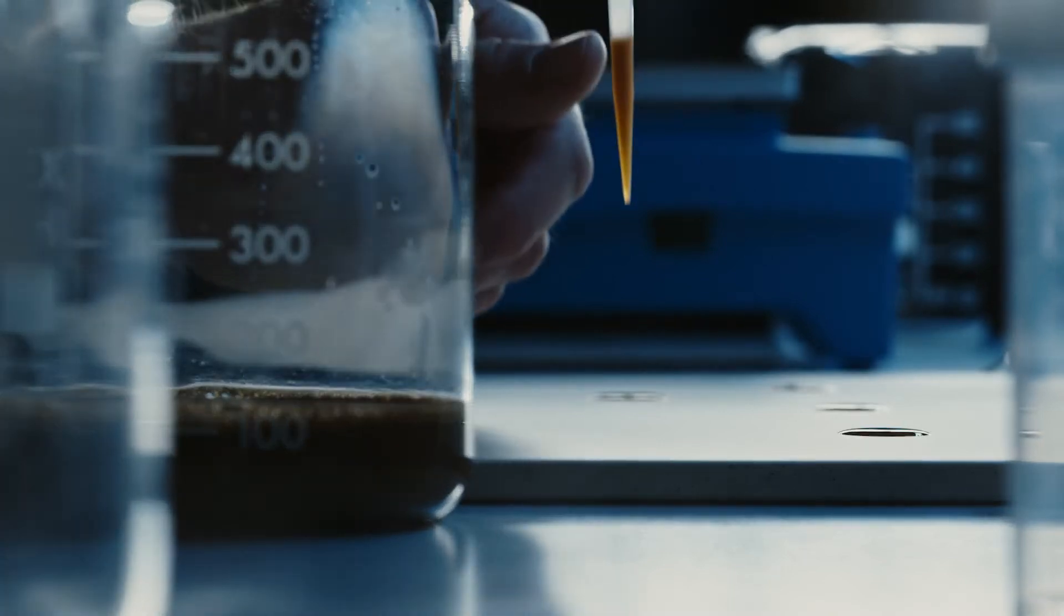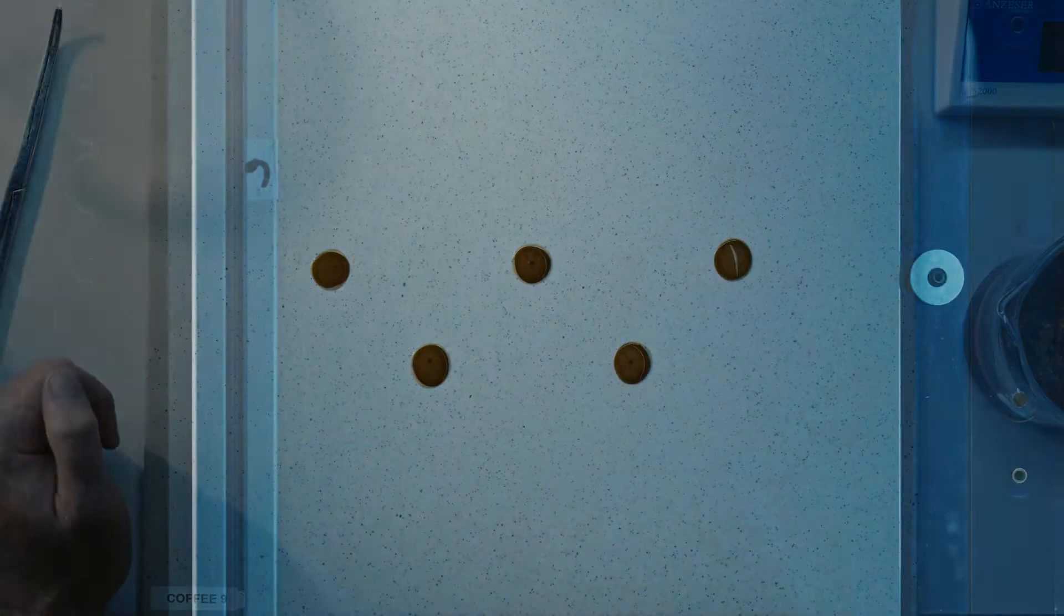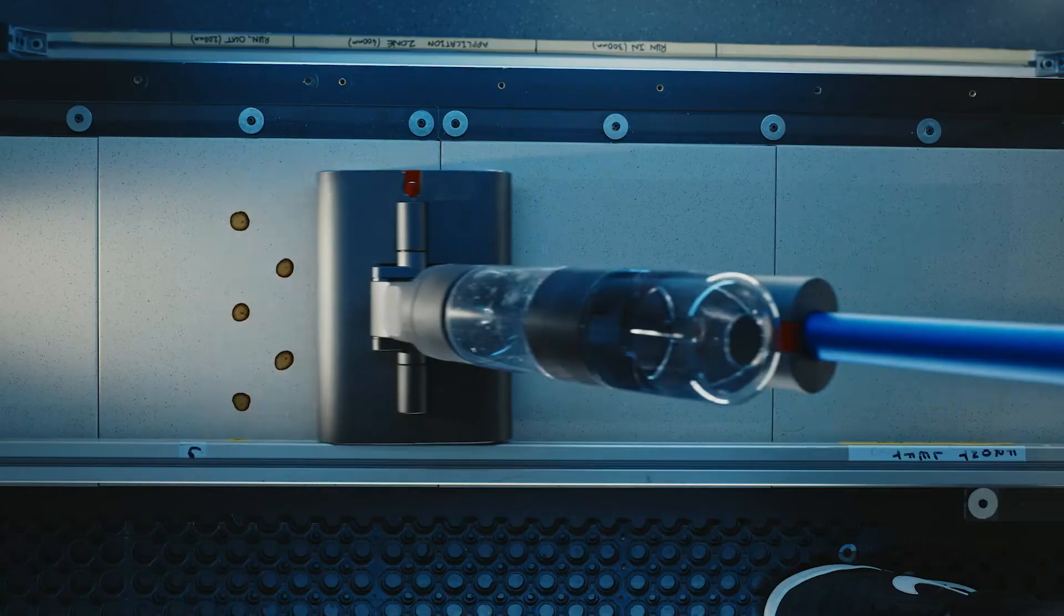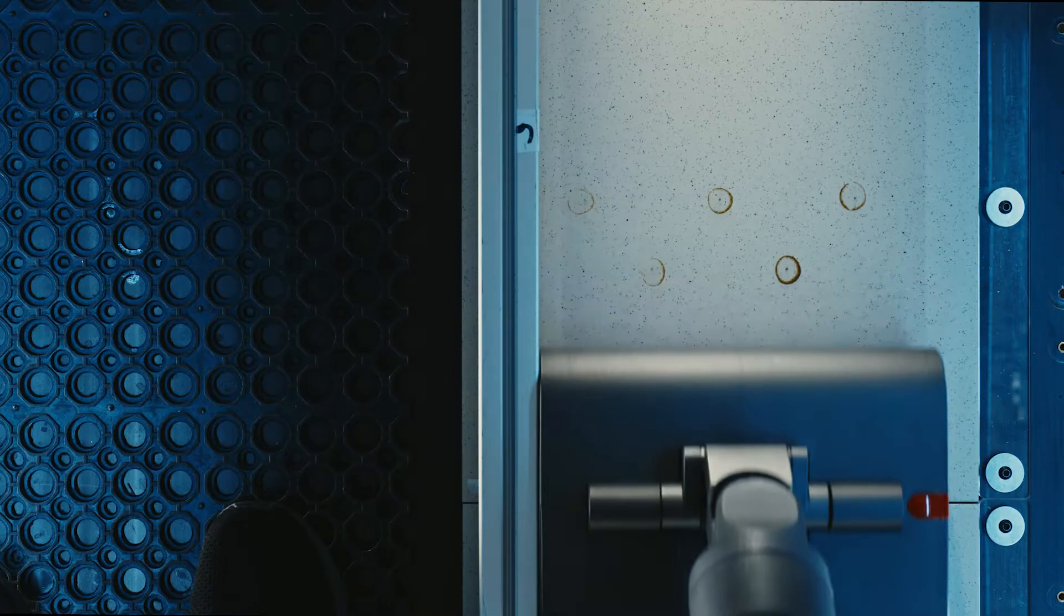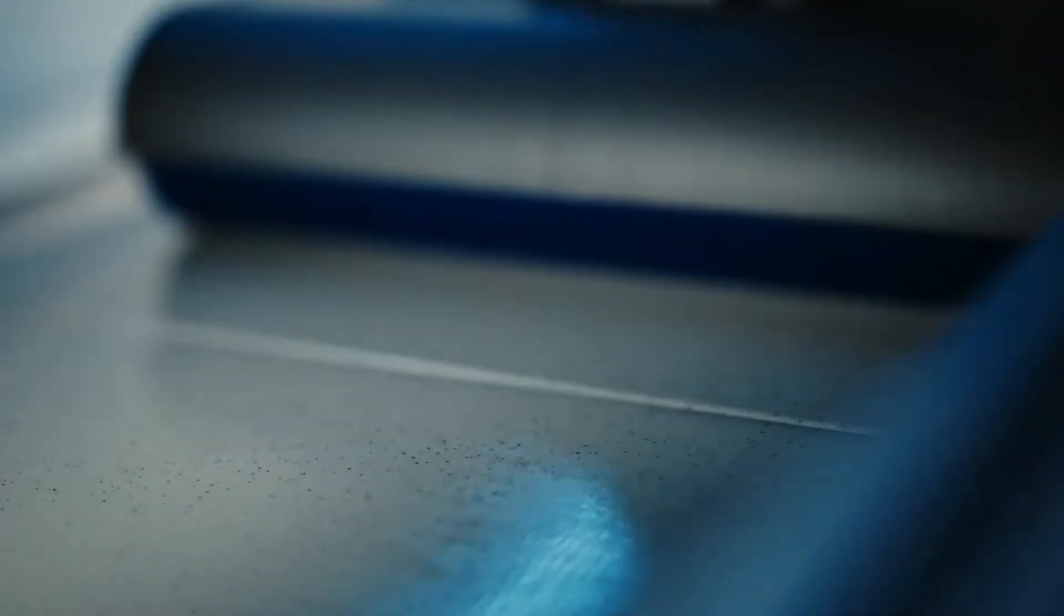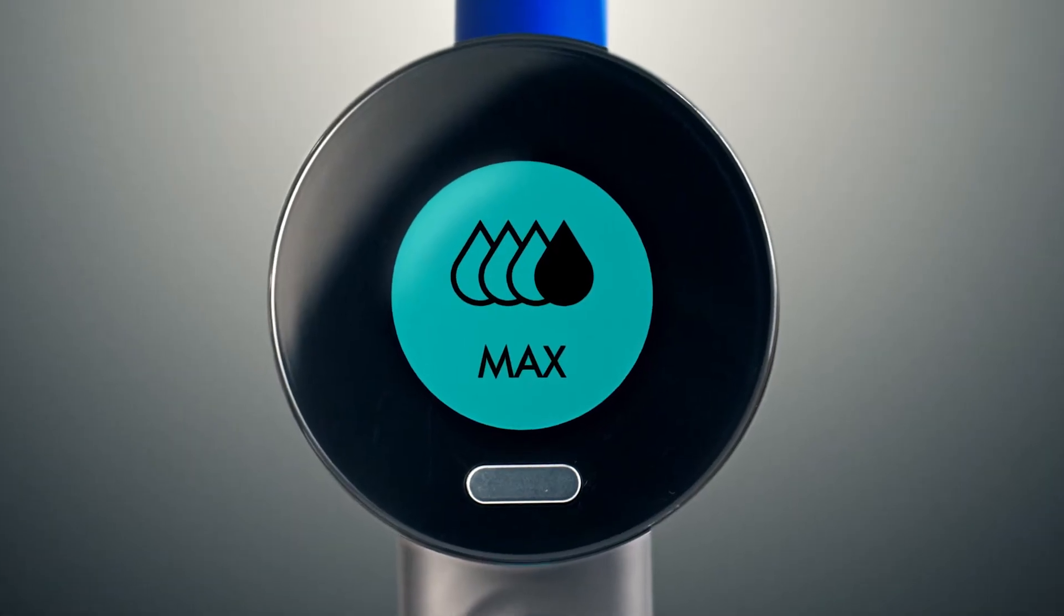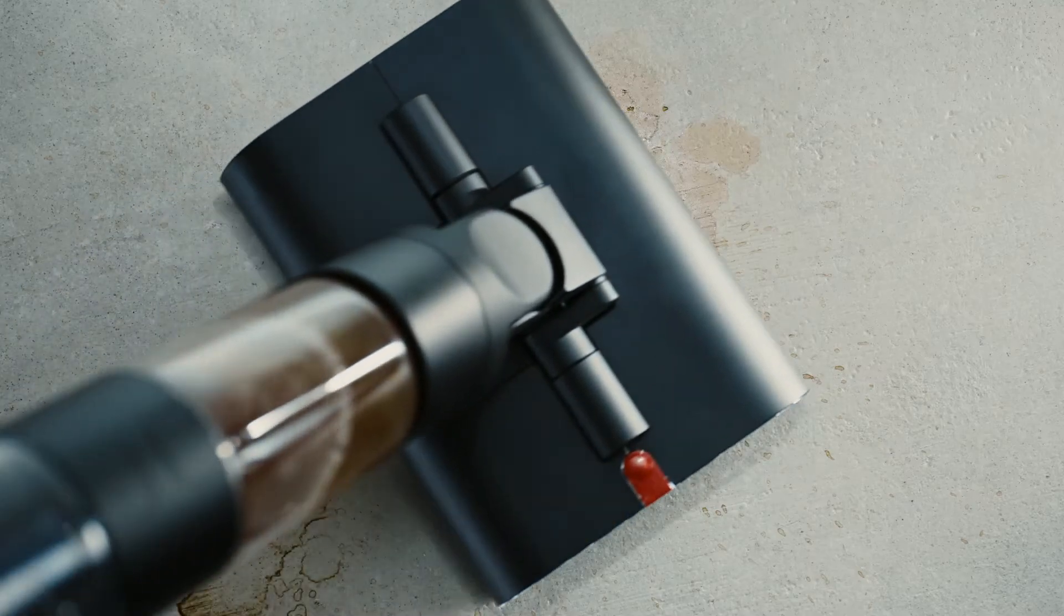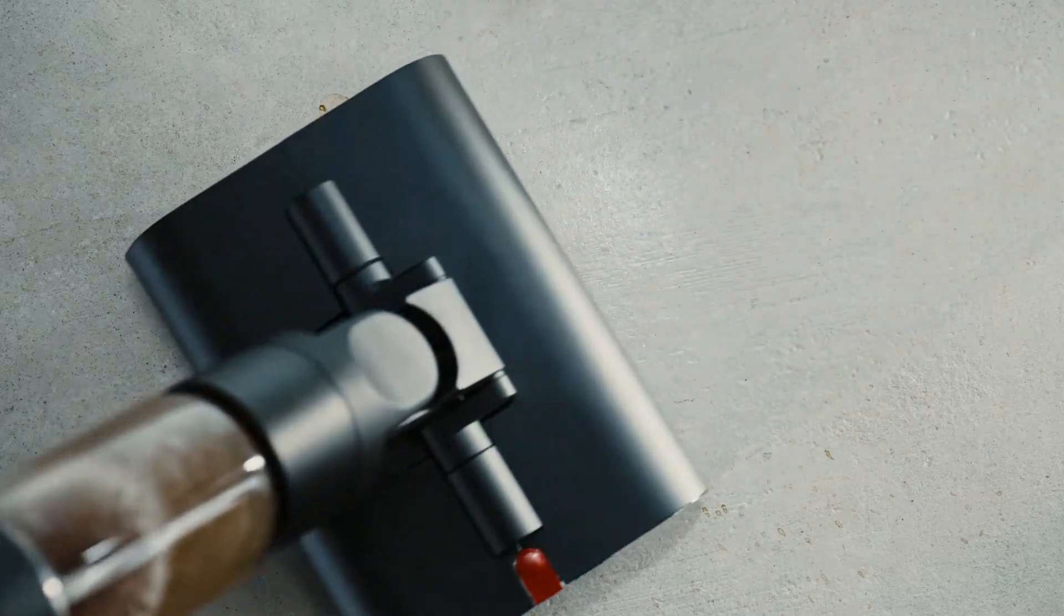The Dyson Wash G1 also has three user selectable hydration modes that enable you to select a hydration level that is ideally suited to the type of flooring in your home. There's also a max mode which maximizes the flow of water to the rollers to remove stubborn stains from the floor.